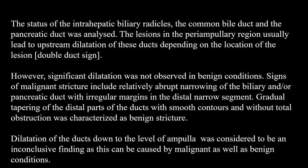Lesions in the periampullary region usually lead to upstream dilatation of ducts. Depending upon the location of the lesion, this is called the double duct sign. Significant dilatation was not observed in benign conditions. Signs of malignant stricture include relatively abrupt narrowing of biliary and pancreatic ducts with irregular margins in the distal segment. Gradual tapering with smooth contours and without total obstruction was characterised as benign stricture. Dilatation of ducts down to the level of the ampulla was considered inconclusive, as it can be caused by both malignant and benign conditions.